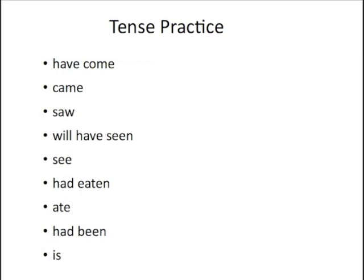Let's practice some of these tenses. Take a look and see if you can say what tense they are. 'Have come' — what do you think? That's present perfect. One way you can tell it's present perfect is that the auxiliary 'have' is conjugated in the present. Past perfect would be 'had come,' but this is present perfect because of 'have.' What about 'came'? 'She came to the party yesterday' — that's the simple past.